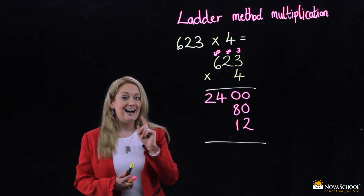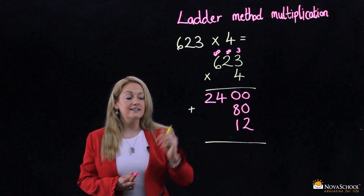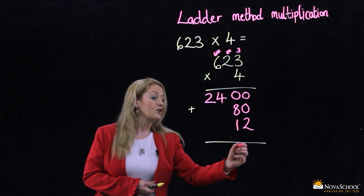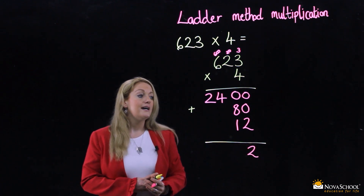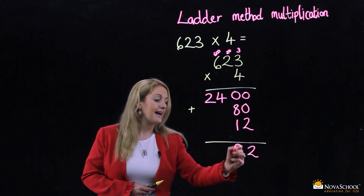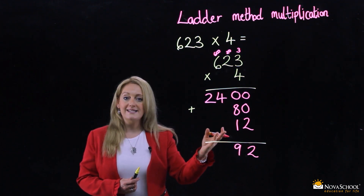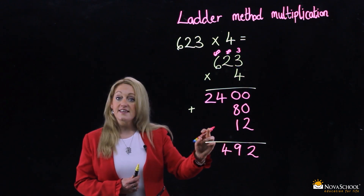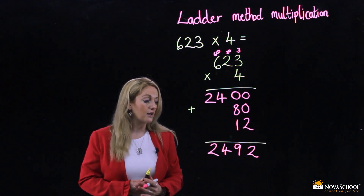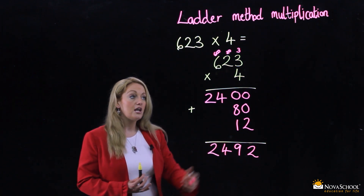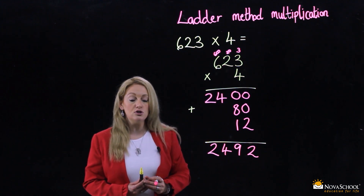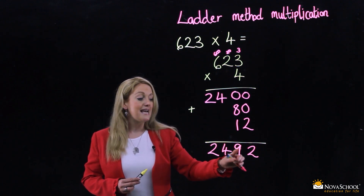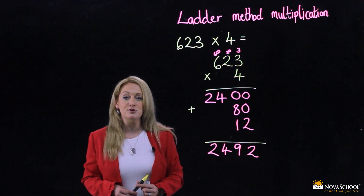And we're going to now add them up — the final step. 0 add 0 add 2 is 2. 8 add 1 is 9. 4 — we're not adding anything to the 4, we pop it down underneath. And 2 the same, there's nothing here, so we pop the 2 down there. And we have a final answer: 623 multiplied by 4 is 2492 using ladder method multiplication.